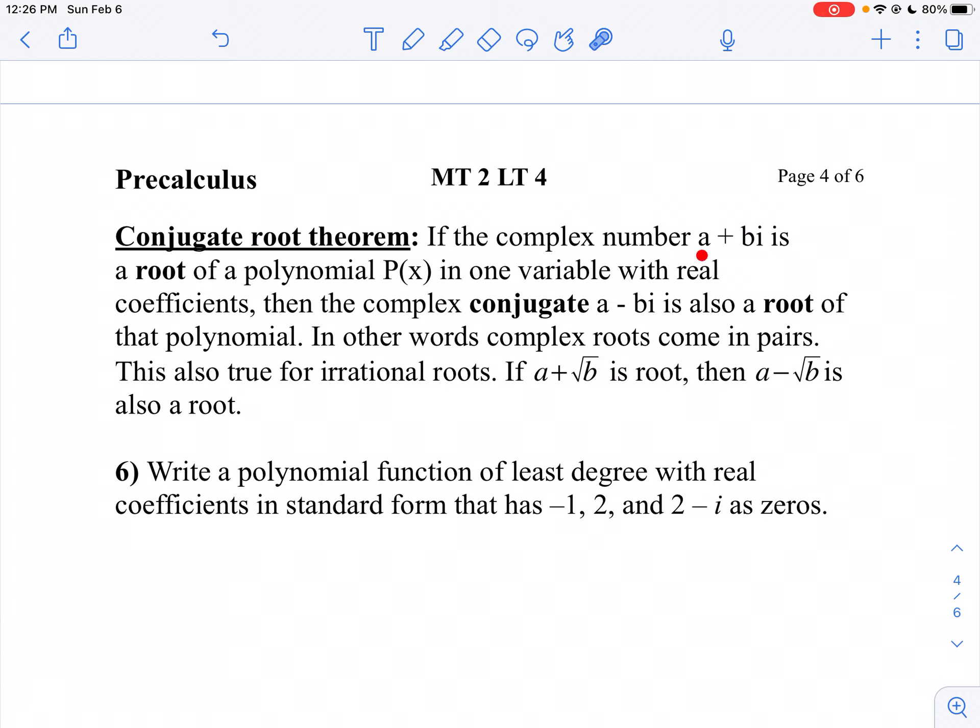So if I've got a form of a plus bi, I know I'm going to have a minus bi as a root. If I've got an irrational root like a plus the square root of b, I know I'm going to have a minus the square root of b. We kind of knew that from the quadratic formula.